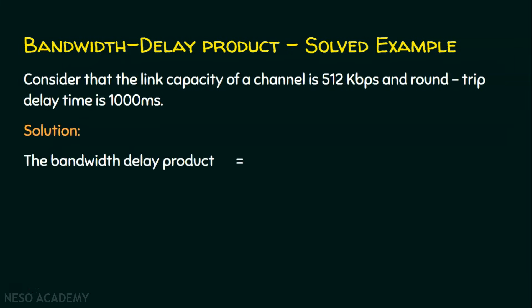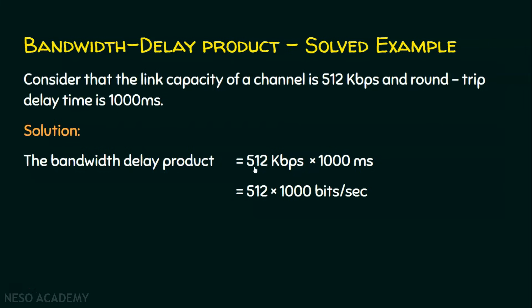Let's solve it. The bandwidth delay product is the bandwidth — 512 kilobits per second — multiplied by the delay of 1000 milliseconds. We convert 512 kilobits per second: kilo means 1000, so it becomes 512 × 1000 bits per second. We then convert 1000 milliseconds: milliseconds means 10 to the power of minus 3 seconds. When we solve this, 10 to the power minus 3 cancels with 1000, giving 1. So we get 512 × 1000 bits, which equals 512,000 bits.